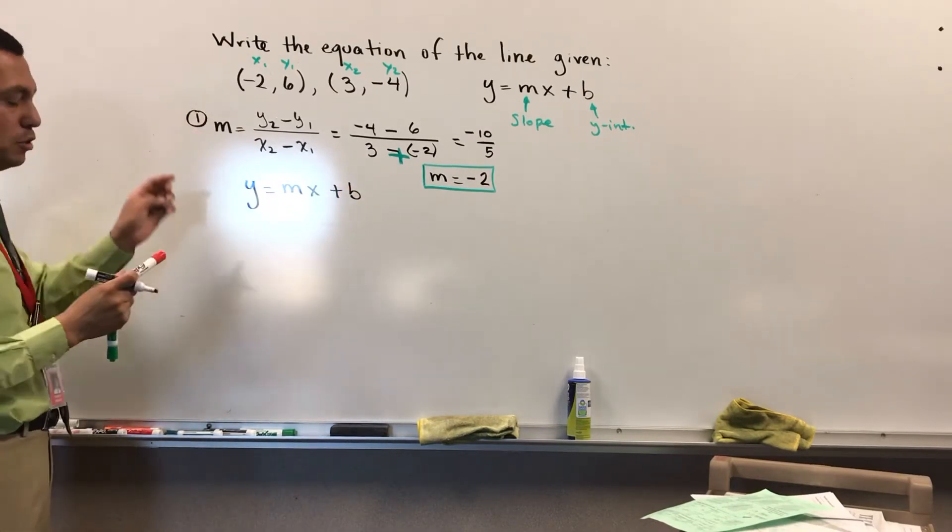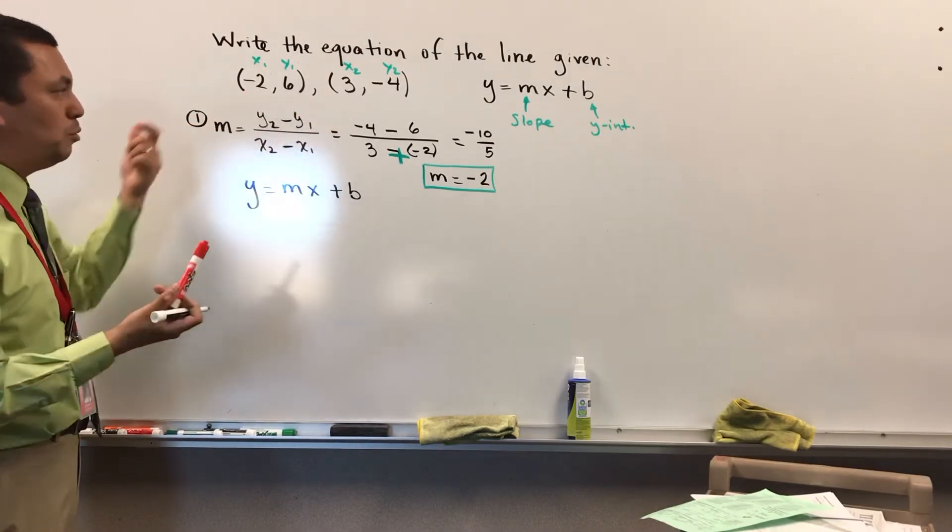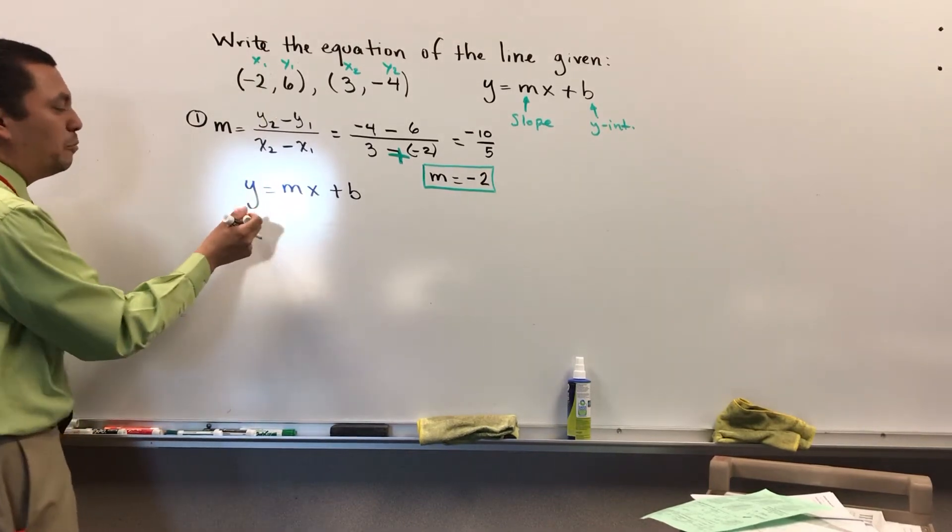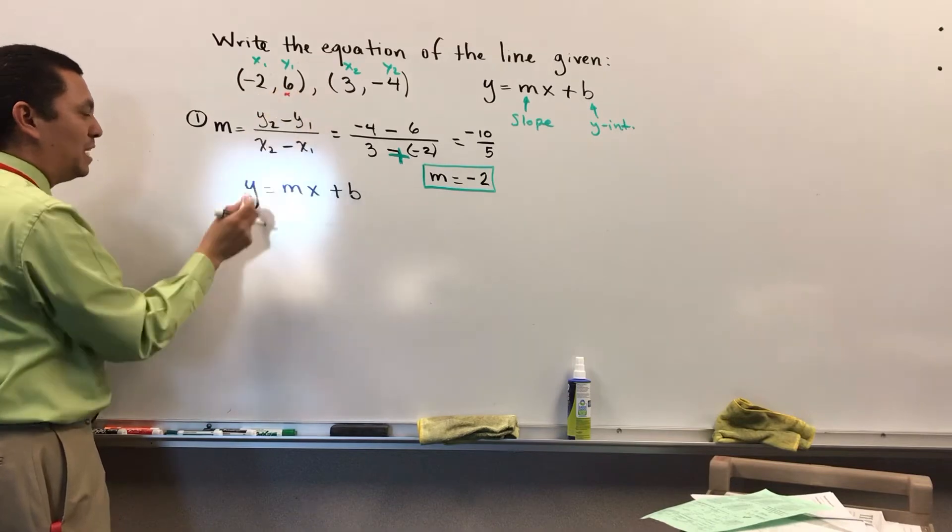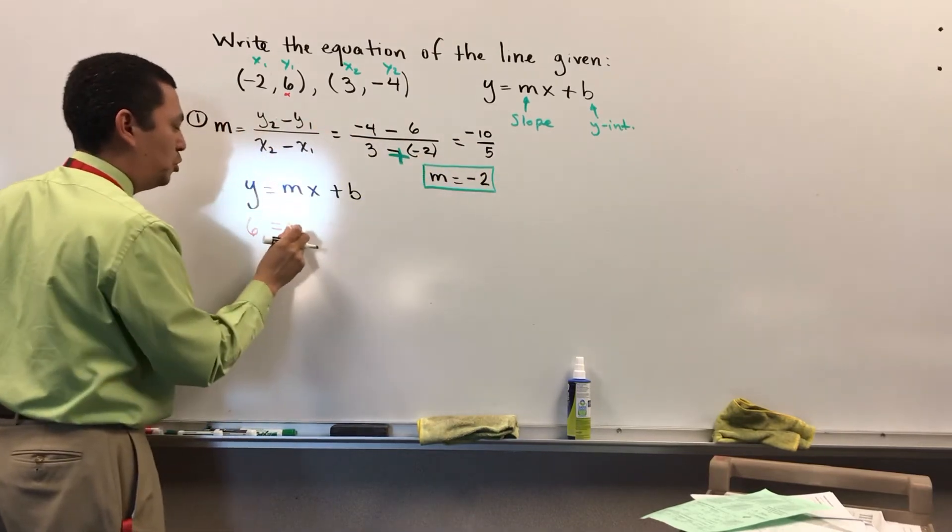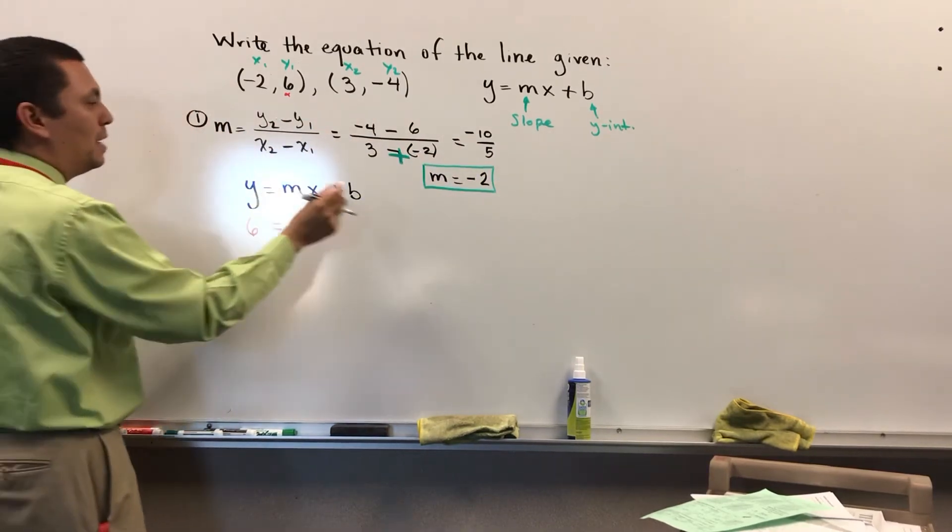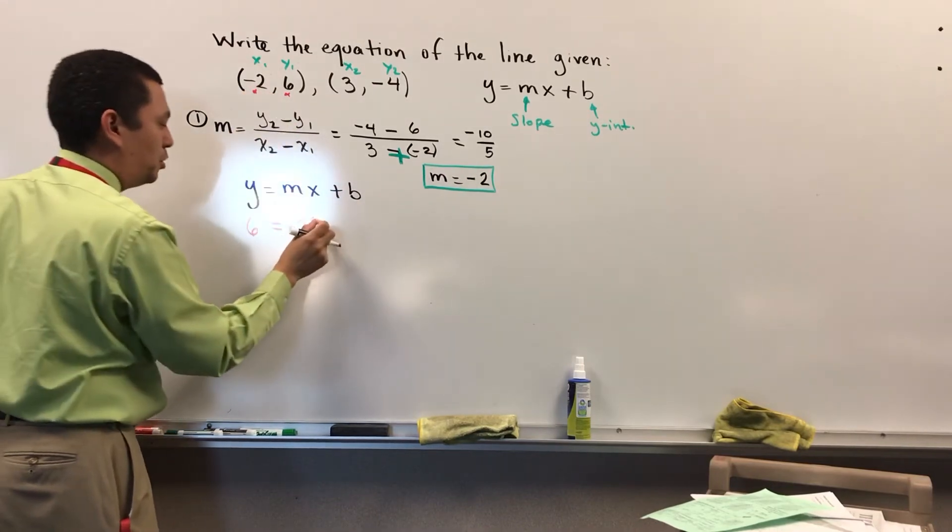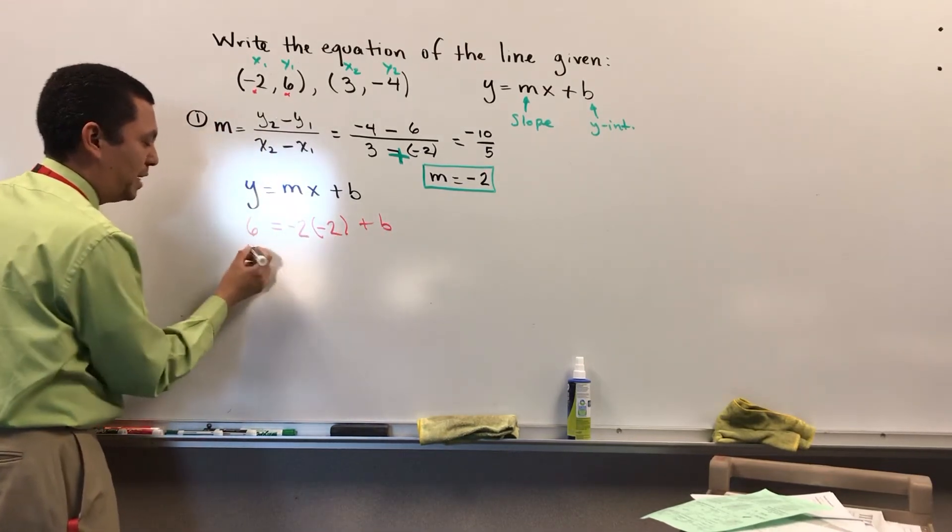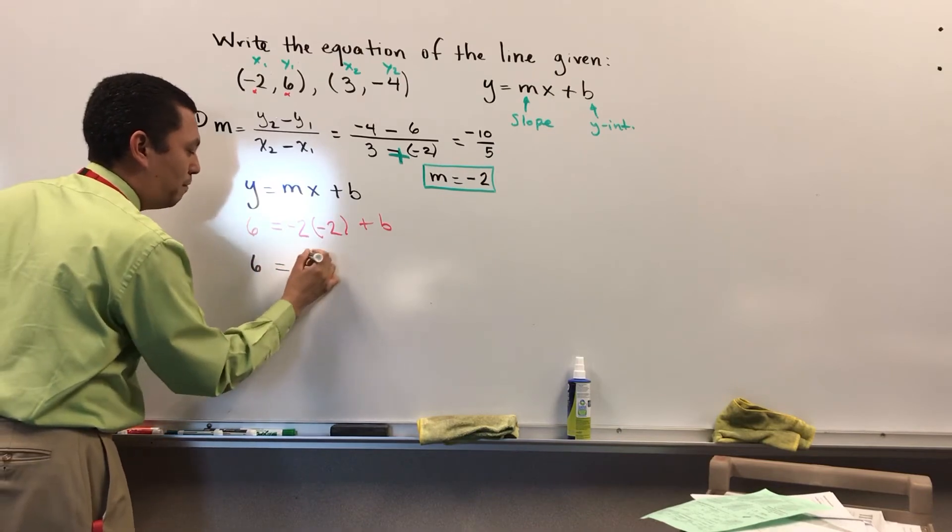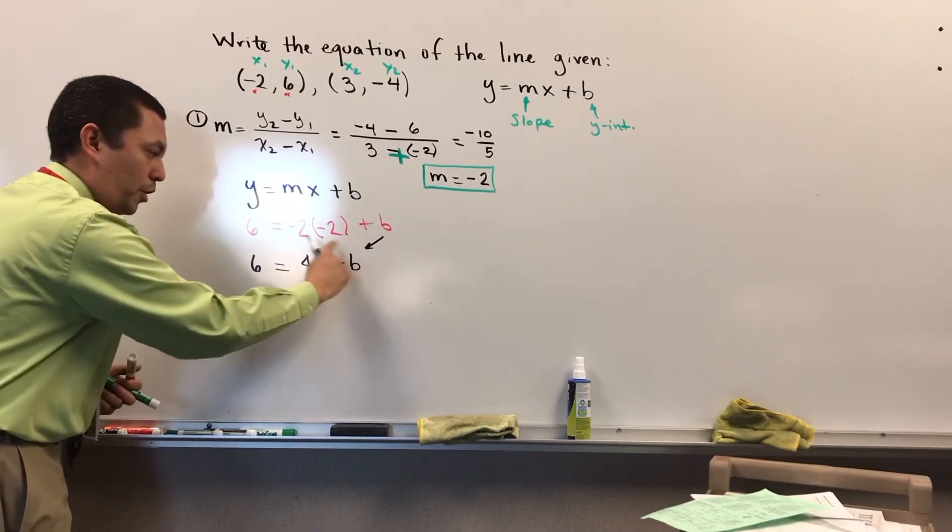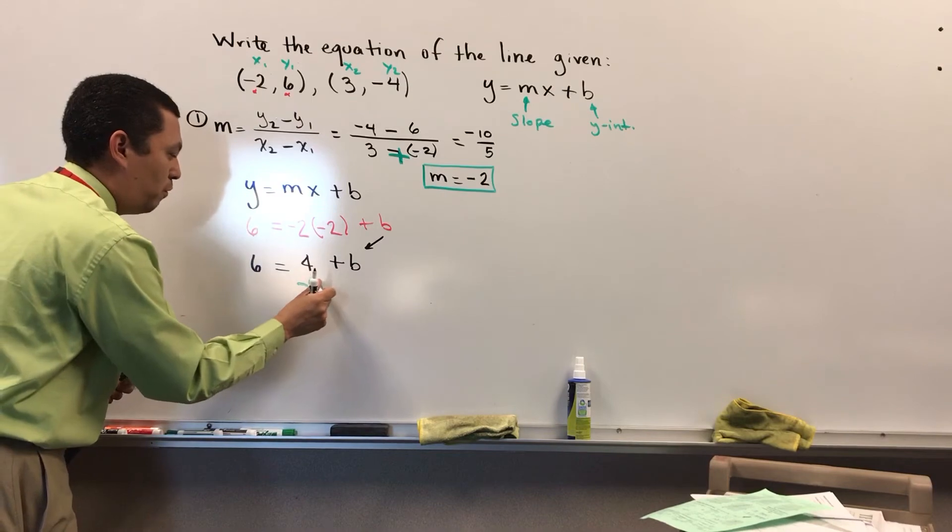I'm going to use whichever of these two points you want. I'm going to use the first one, x1, y1. And we're going to do substitution. I have 6 is the value of y. So I have 6 equals to m. I know the slope is negative 2. I found it 2 times x. x is negative 2 plus b. Then we multiply negative 2 times negative 2 is positive 4. So I have 4 plus b. Then we solve for b, the variable, so minus 4.